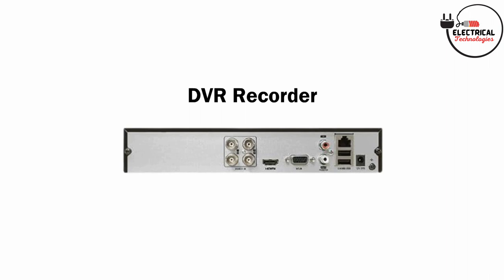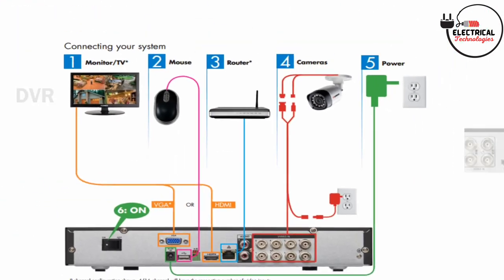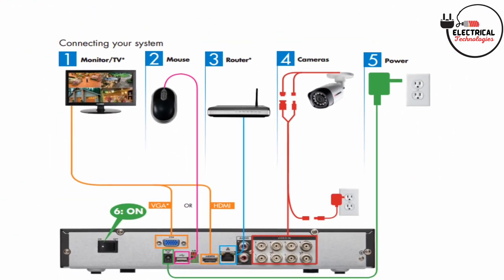AD encoder: DVR recorders heavily rely on AD encoders, which are responsible for processing the raw data streaming from the camera into viewable footage. Thus, every camera in this security system needs to be connected to both the recorder and a separate power source. Benefits of DVR systems: there are a few noticeable benefits of a DVR system making them increasingly attractive — minimal bandwidth usage, signal stability, and low cost.